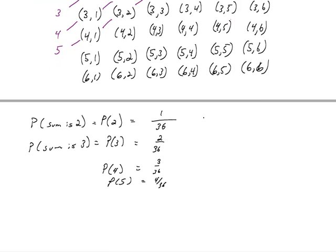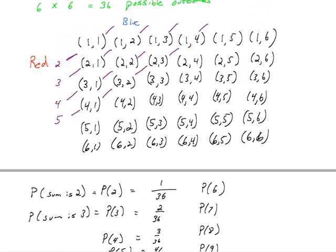And if we continue, what's the probability of rolling a 6, a 7, an 8, a 9, a 10, an 11, and a 12? We can use this idea of counting along the diagonal to answer those.